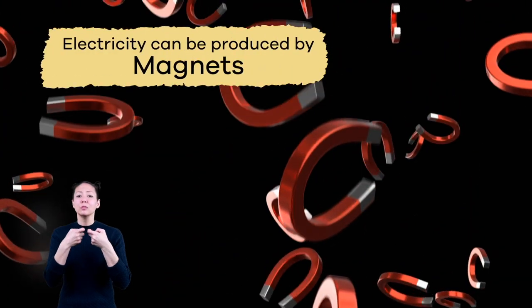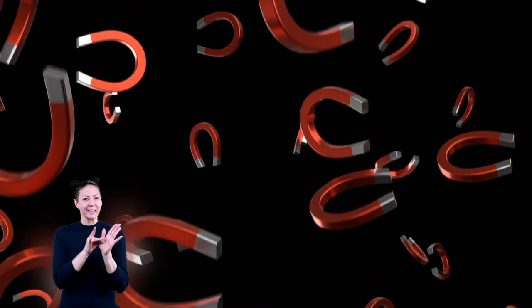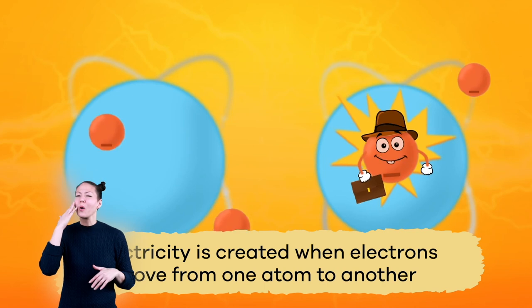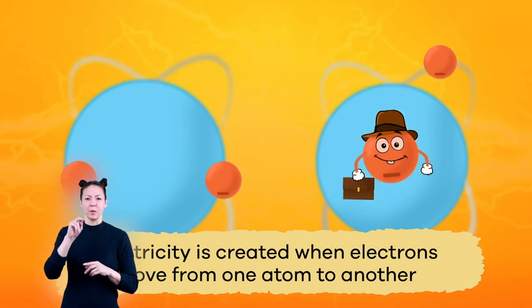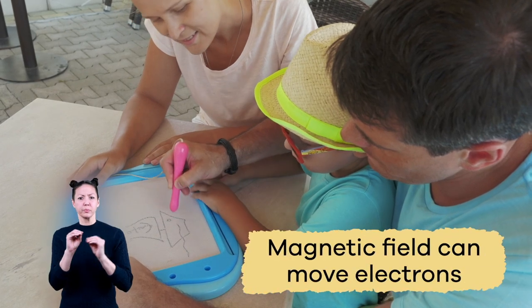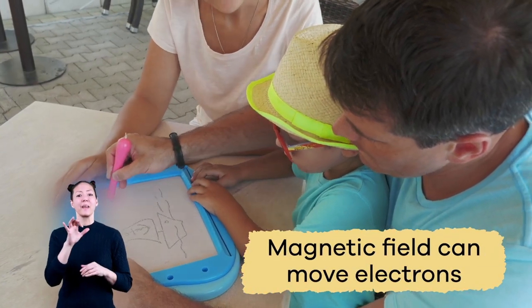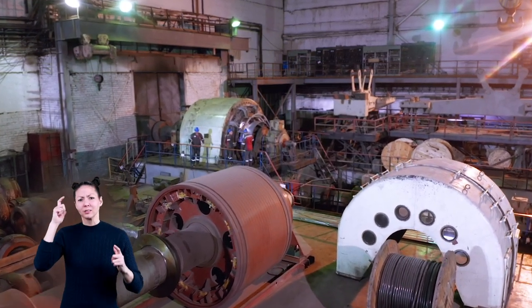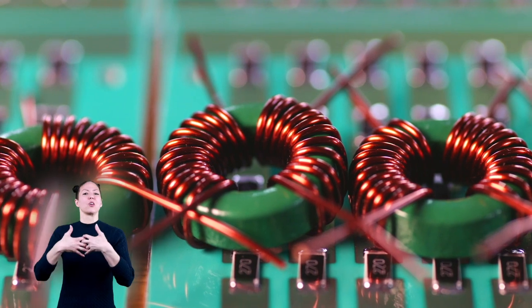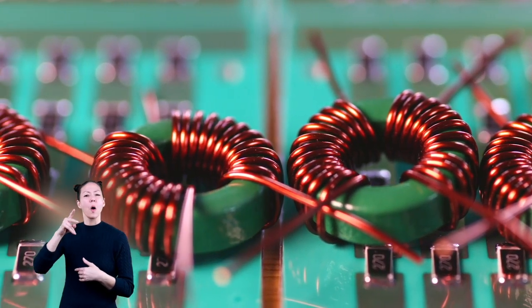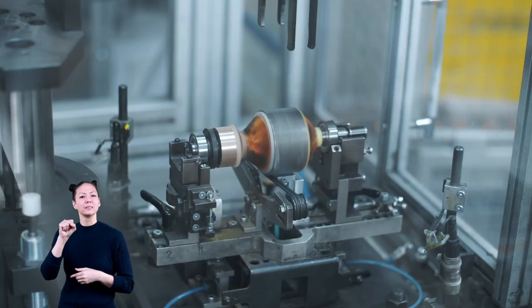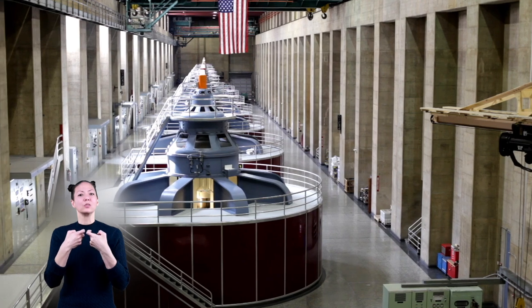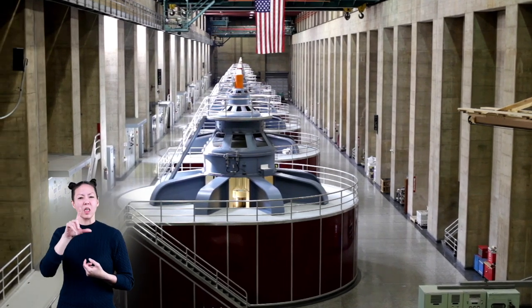Electricity can also be produced by magnets. Can you guess why? You already know that electricity is created when electrons move from one atom to another. But did you know that a magnetic field can move electrons? Power plants use giant magnets to create electricity in a generator. The generator has a coil of copper wire inside the magnets. Steam makes the generator spin, causing the electrons in the copper wire to flow through the power lines.